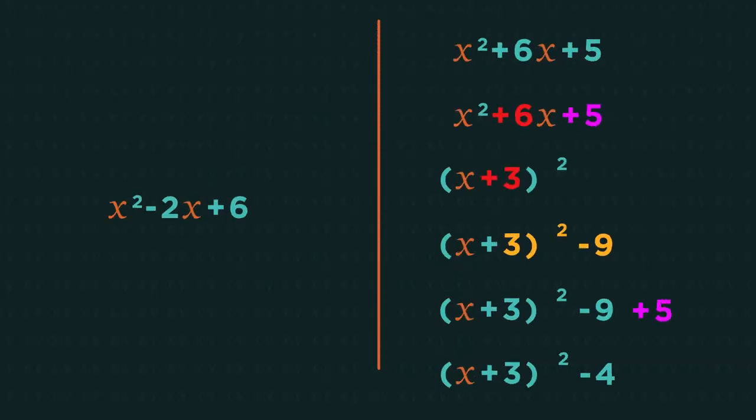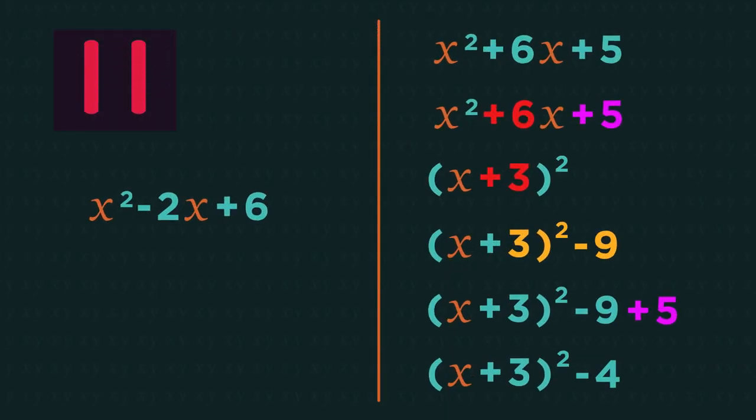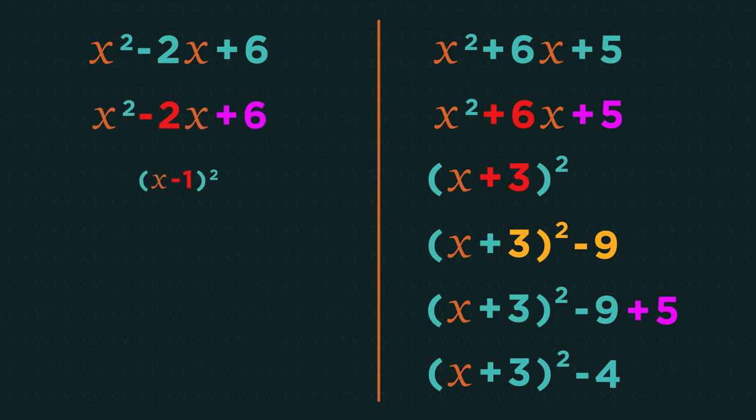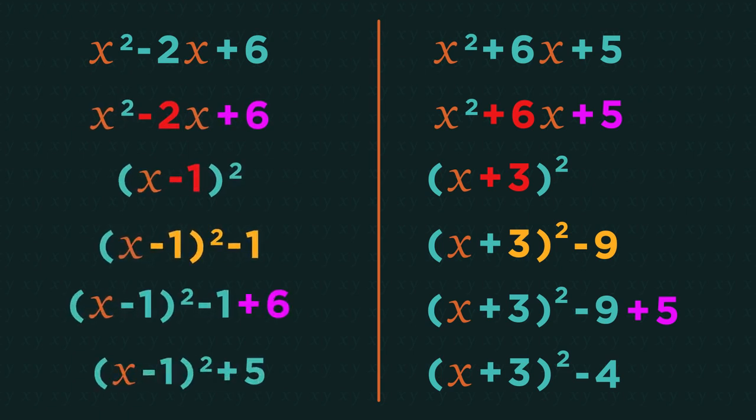I'm going to get you to do a question first, before I explain why we need to subtract that number. So subtract 9 from the example before. Give this question a go yourself. Pause the video, work out the answer, and click play when you're ready. Did you get it right? X minus 1 squared plus 5. So that is how we complete the square.